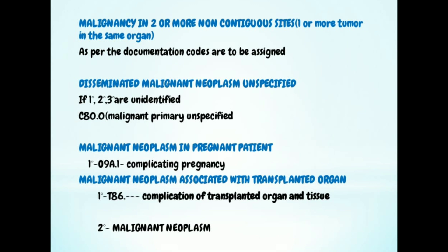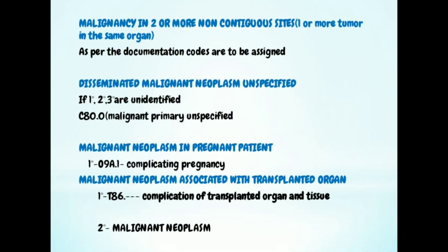For malignant neoplasm in a pregnant patient: pregnancy has sequencing priority over all chapters, which we will discuss in chapter 15. For now, the primary will be O9A.1, which is malignancy complicating pregnancy, and the malignancy is coded as secondary.